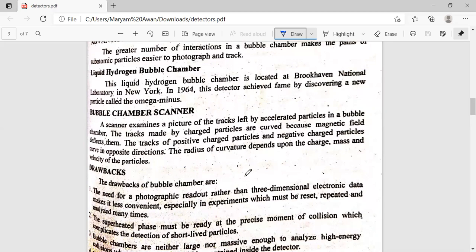The bubble chamber scanner examines the pictures of the tracks which are left by accelerated particles in the bubble chamber. These tracks are made by the charged particles. These are curved because of the magnetic field. The radius depends on the charge, mass, and velocity of the particles.